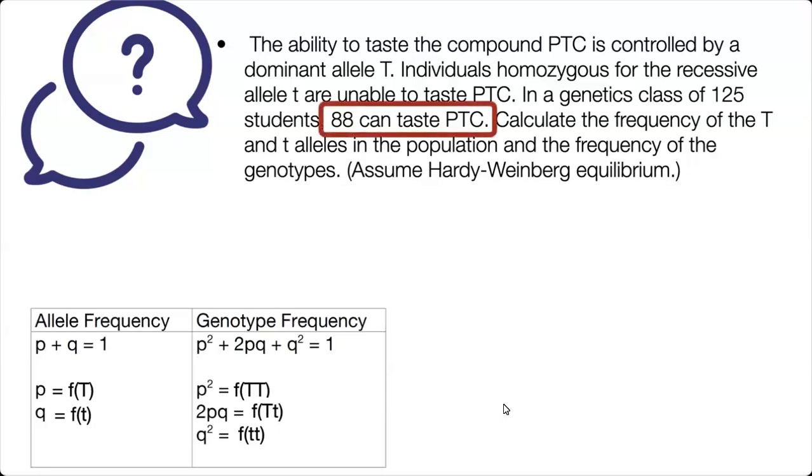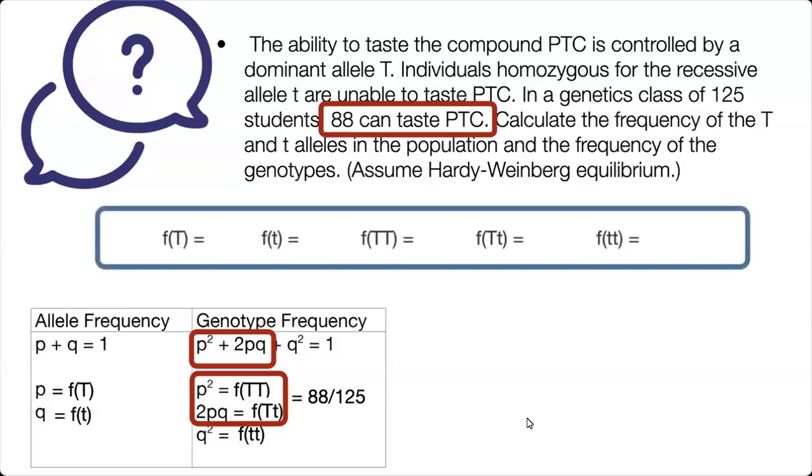And so the question says that 88 can taste PTC. And the first thing we want to do is figure out what variables that corresponds to. So 88 is actually P squared and 2PQ together, because it's the frequency of big T big T and the frequency of big T little t. So we only need one allele of big T in order to be able to taste PTC. And so we'll just write in our table here that the value combined of P squared and 2PQ is 88 out of 125. So the question asks us to find the allele frequencies and the genotype frequency. So this is what we are looking for.